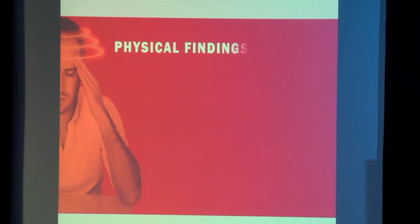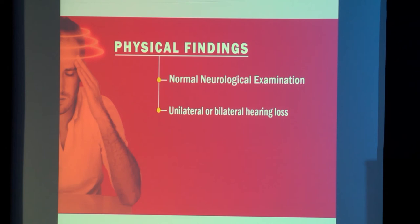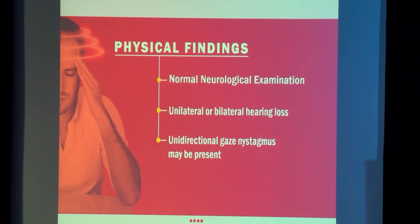In physical findings when we see a patient who complains of a drop attack, we will have to go through a thorough neurological examination — testing cranial nerves, the motor system, and the sensory system — and essentially it would be normal. We will definitely find some hearing loss when we test the patient, which can be unilateral or bilateral. We will also be able to see a unidirectional gaze nystagmus in these patients.